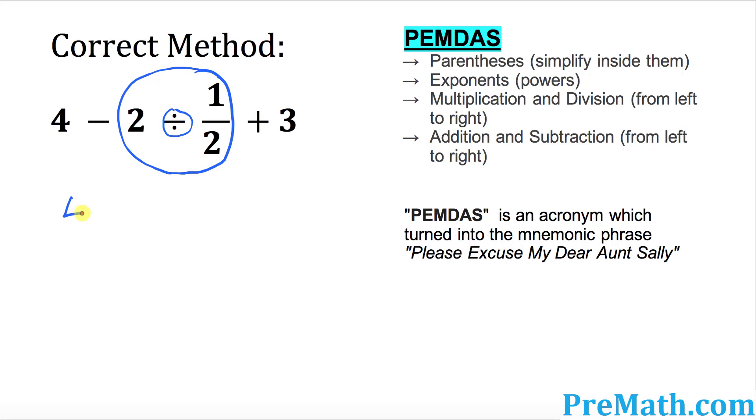So we can write this as 4 minus 2 times, this simply could be inverted as 2/1 plus 3. Now you know 2/1 is simply same as 2, and then plus 3.